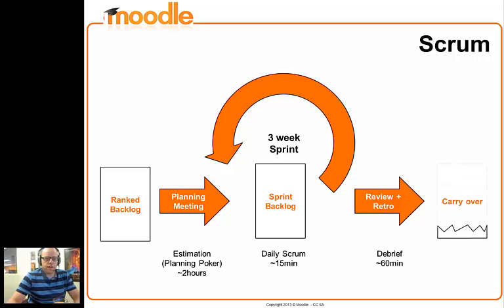Left over at the end we have some issues that weren't complete. Ideally this is none, but usually there's a small number that haven't been completed. The reasons for that can be that we're waiting for some sort of communication with some member of the community, because we're an open source project. Sometimes issues are waiting for other issues to be completed first. The retrospective also hopefully delivers a certain amount of wisdom that the team can carry forward and allow them to improve the way that they do their work.